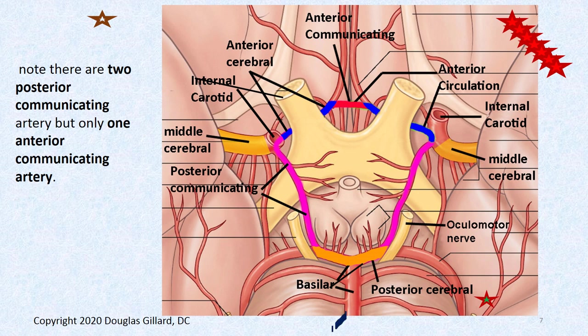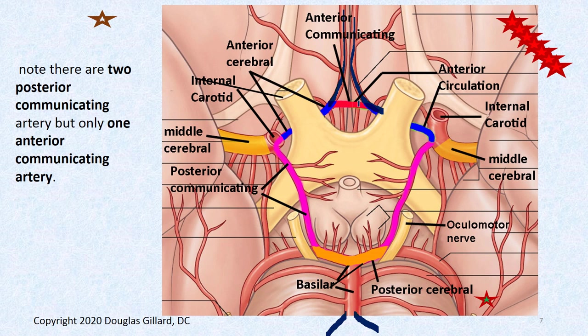Here's the basilar artery, which was formed by the vertebral arteries. It dead ends right here and splits into a right and left posterior cerebral artery. There's a branch that comes off the posterior cerebral artery called the posterior communicating artery, which plugs right into the very end of the internal carotid artery. Then we have the anterior cerebral artery — one of the terminal ends of the internal carotid artery. Between the right and left anterior cerebral arteries, there's a communicating artery called the anterior communicating artery.